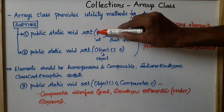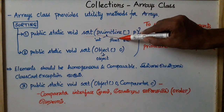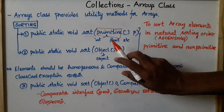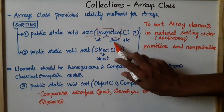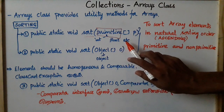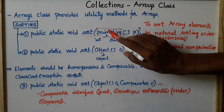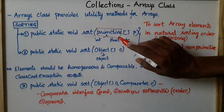Primitive data types include integer, float, char, double, and boolean. For these, we use primitive data types.